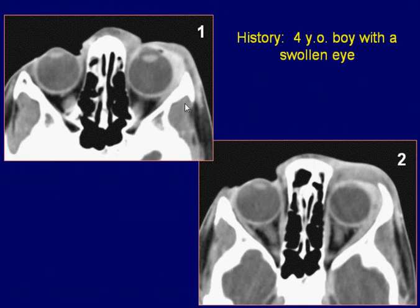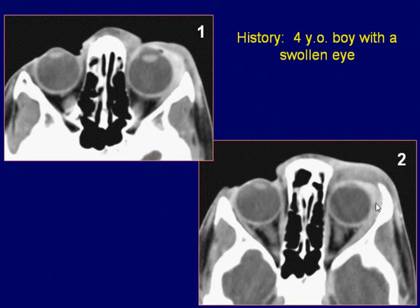A four-year-old boy with eye swelling. Axial post-contrast CT scan of the orbit shows swelling and enhancement of the preseptal soft tissues of the left orbit. The abnormality extends posteriorly lateral to the globe, involving the lateral extraconal space and lateral rectus muscle. The left eyeball appears not to be involved.